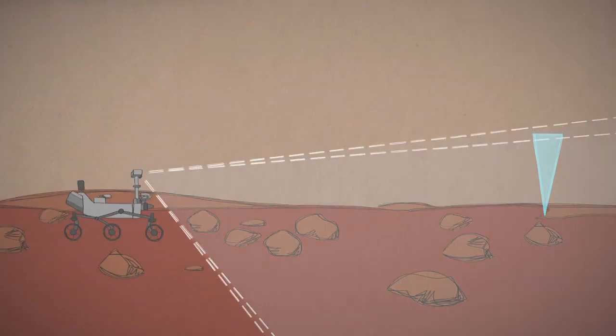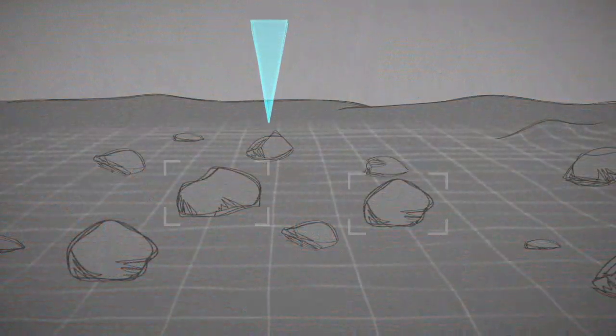Then, using two cameras like human eyes, the rover gets a 3D view of hazards such as large rocks and steep slopes.